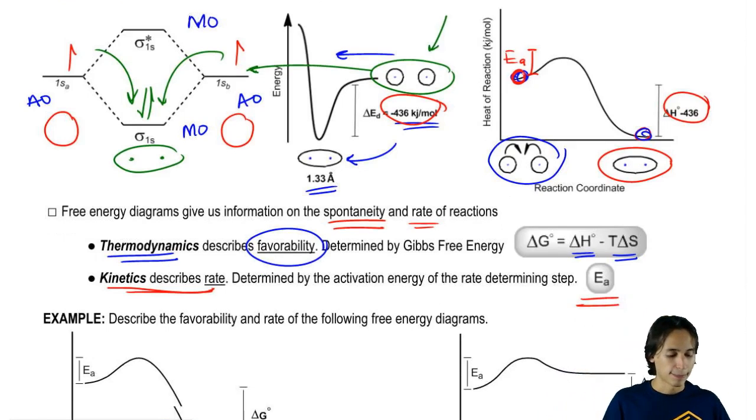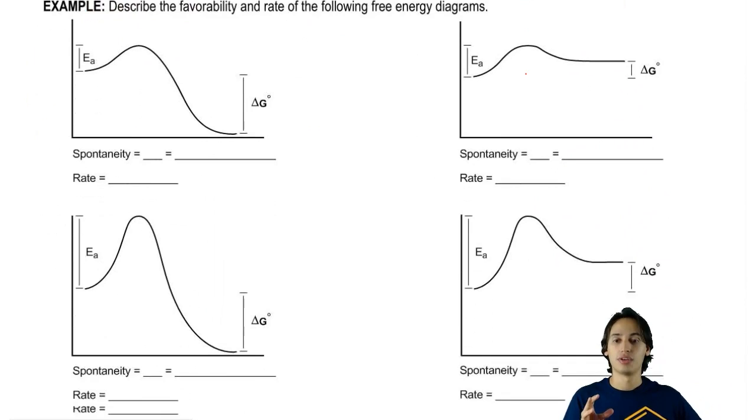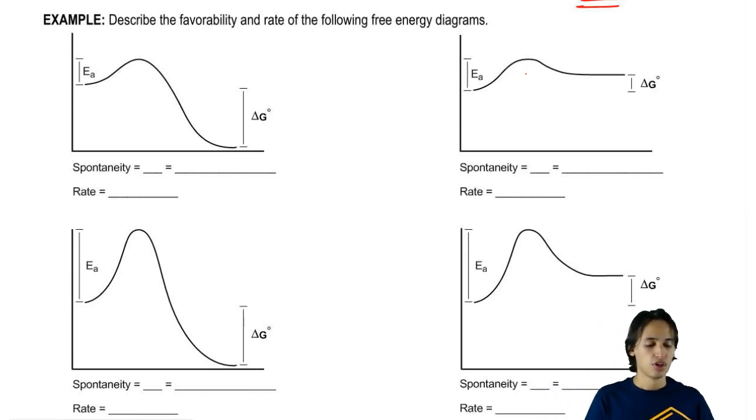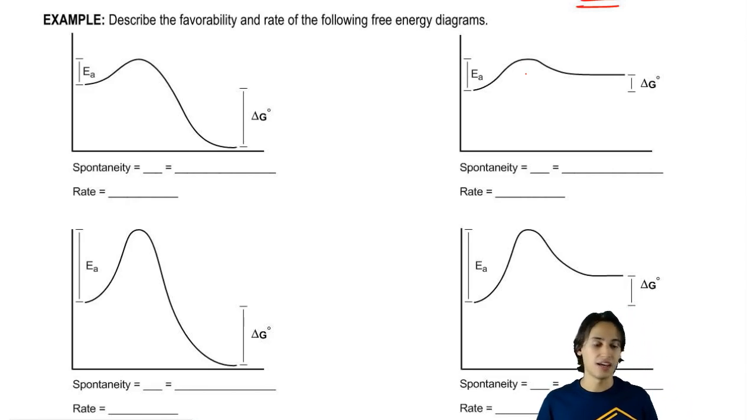What I want to do now is some really basic qualitative recognition here. I don't want you to calculate anything yet, but we're just going to decide what kind of reactions are we looking at here. Are they going to be spontaneous? Are they going to be non-spontaneous? Are they going to happen fast or slow? What I want you to do is go ahead and look at the following four reactions and try to figure out if it's spontaneous or not and if the rate is going to happen quickly or slowly.